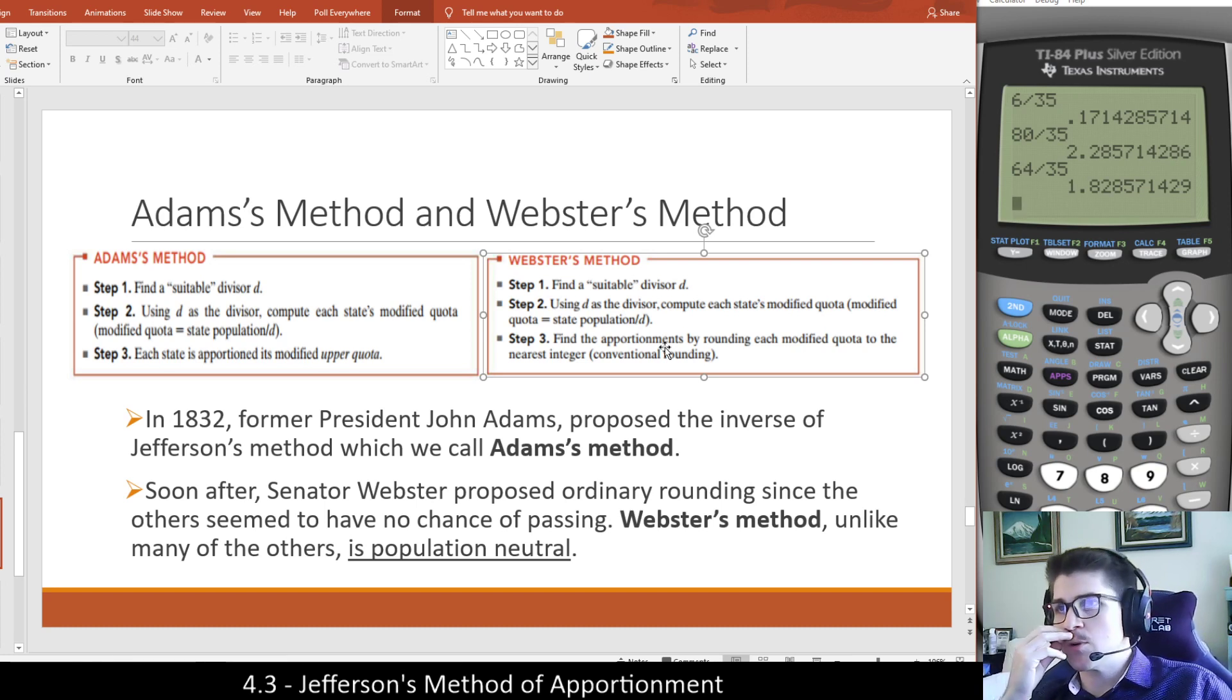A little bit of historical aspect here is in 1832, John Adams proposed that they switch from rounding down to rounding up. The reason that rounding down was kind of a problem is there was population bias to rounding up and rounding down as well, similar to how Hamilton's method favored larger populations. So did Jefferson's method. And Adams' method was also biased towards smaller populations.